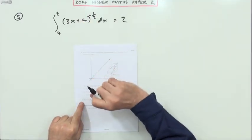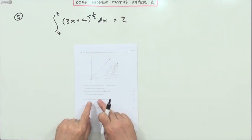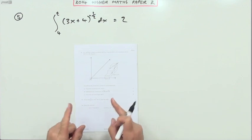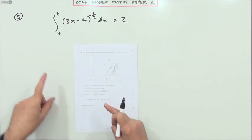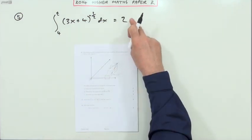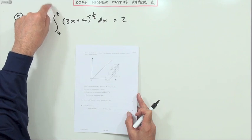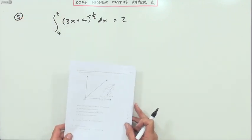Number 5 from the 2014 Higher Maths Paper 2: an integration with a function of a function, but with a twist. Instead of having the limits and evaluating the result, you know the result and have to find one of the limits - the upper limit called t.